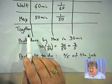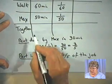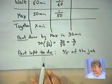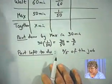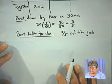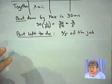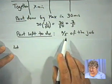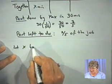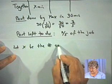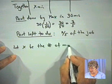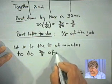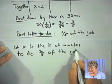Let's say that together, it takes them x minutes to finish the job. Again, it's important to write down what the variable stands for. In this particular case, the x... That's going to be the time it takes them to do the part that's left. Let x be the number of minutes to do 2/5ths of the job, because that's the part that's left.